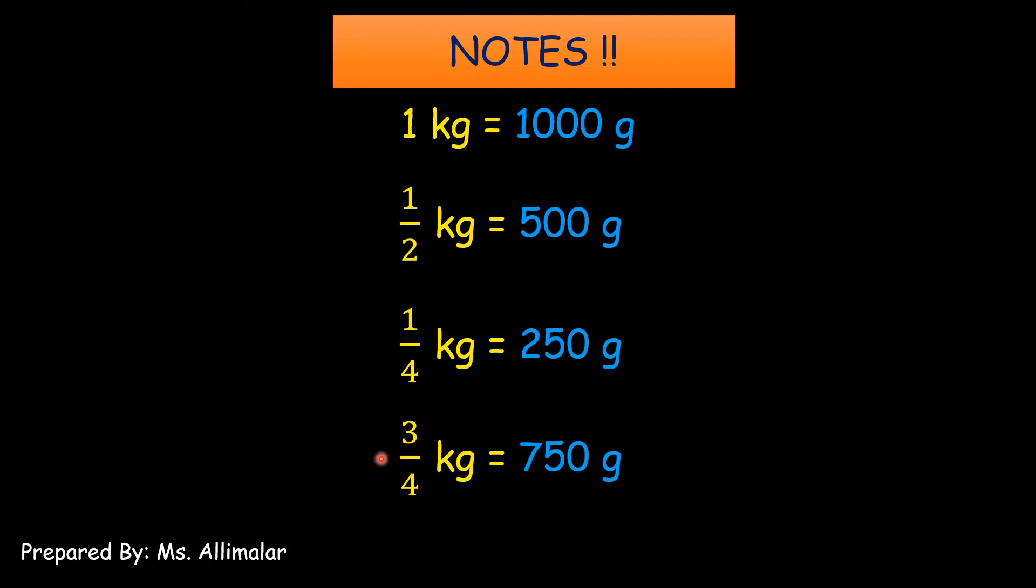And then this one, three quarters. Guys, 3 quarters of 1 kg is equals to 750 grams. Now, guys, is it clear? Now, if you're clear with the notes, now let's go for question. Next slide.